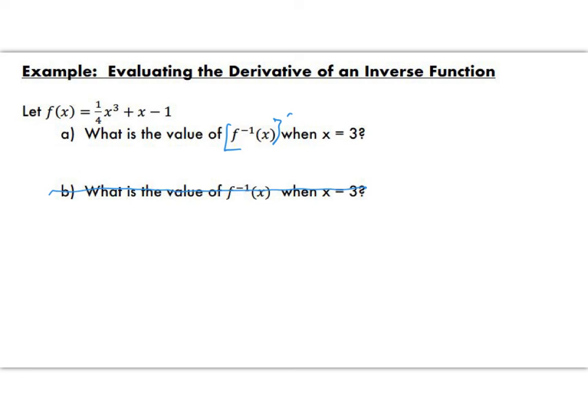Now let's pin down some things here. This function, 1 fourth x cubed plus x minus 1, we are going to have a challenging time finding the inverse of that function for several reasons. Switching out x and y and then trying to solve for y is not going to be pretty. In order to help this out, we're going to try to find the derivative only, and we don't need to actually find the inverse.